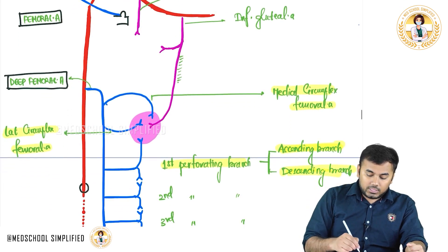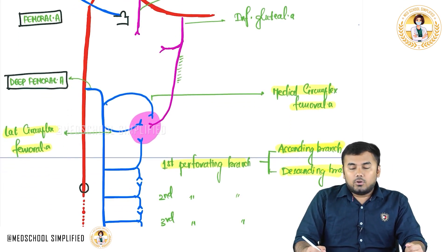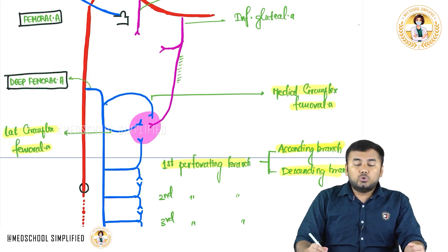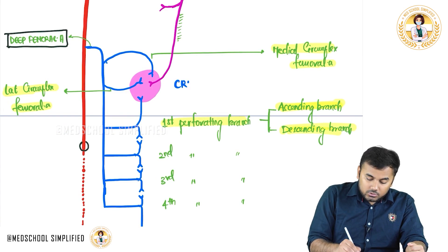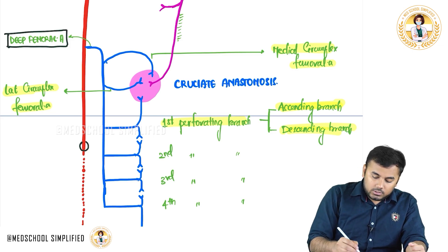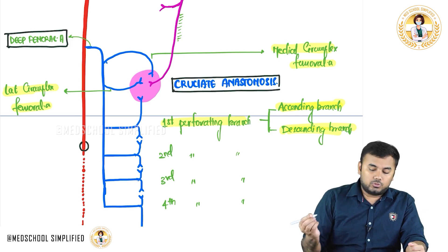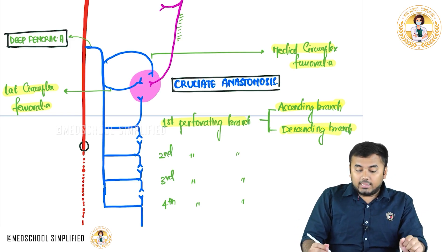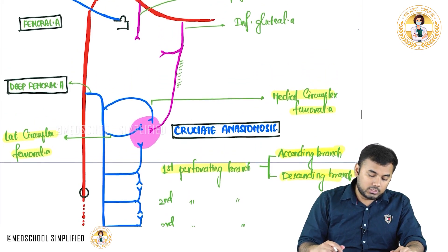All of these together — the lateral circumflex femoral artery, medial circumflex femoral artery, and the descending branch of the inferior gluteal artery — form an anastomosis. This kind of anastomosis is called the cruciate anastomosis. Other than this, there are two more anastomoses.